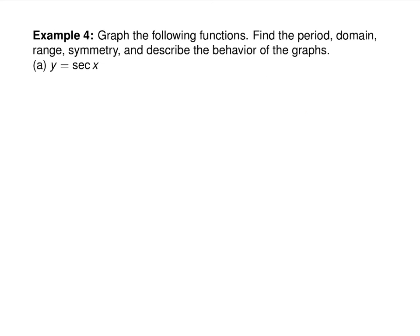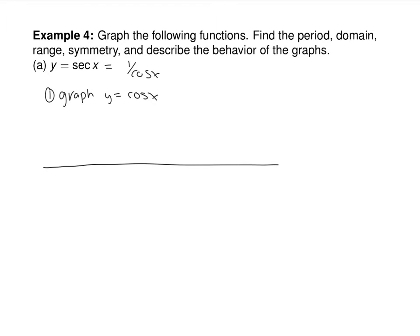Graphing cosecant and secant is definitely the trickiest. Secant is 1 over cosine, so the first thing you do is graph cosine of x. On tomorrow's quiz, I put grid lines and tick marks in so you don't have to worry about drawing straight lines. You are going to have to graph every single function tomorrow: sine, cosine, tangent, cotangent, cosecant, and secant — you must produce those graphs at least once.